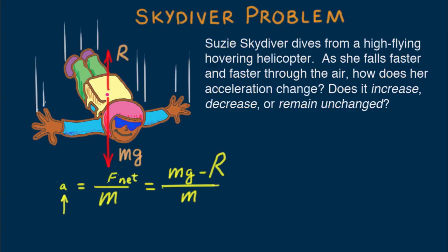So, we have the answer to our question. As she falls faster and faster, air resistance R increases, making mg minus R smaller, resulting in a decreased net force and a decreased acceleration. Problem solved.